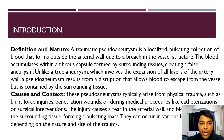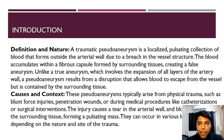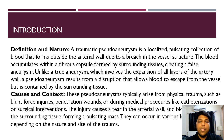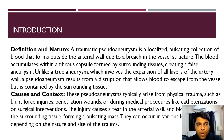Introduction: A traumatic pseudoaneurysm is a localized pulsatile collection of blood that forms outside the arterial wall due to breach in the vessel structure. The blood accumulates within a fibrous capsule formed by surrounding tissues, creating a false aneurysm. Unlike a true aneurysm which involves expansion of all layers of the artery, a pseudoaneurysm results from a disruption that allows blood to escape from the vessel but is contained by the surrounding tissue.